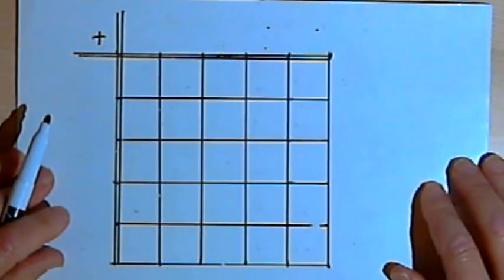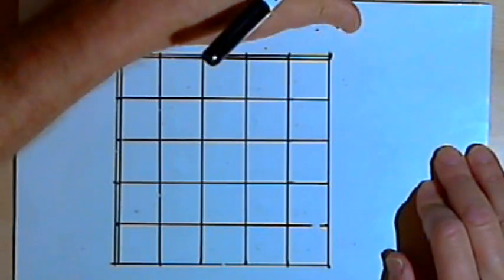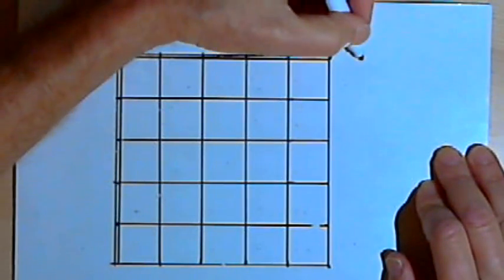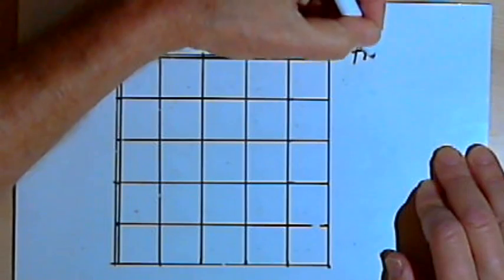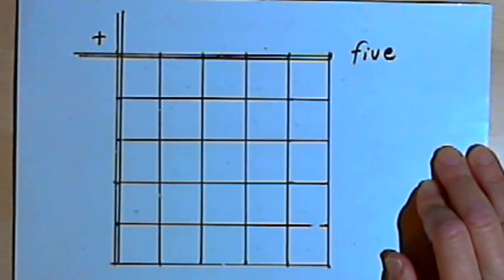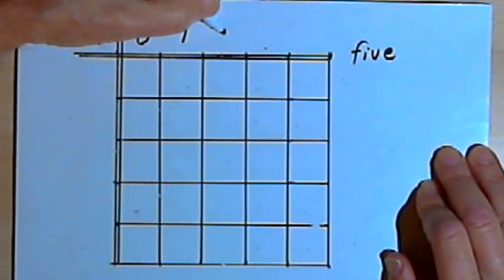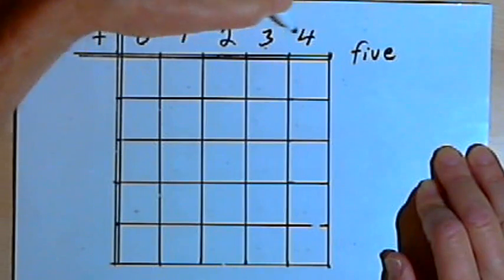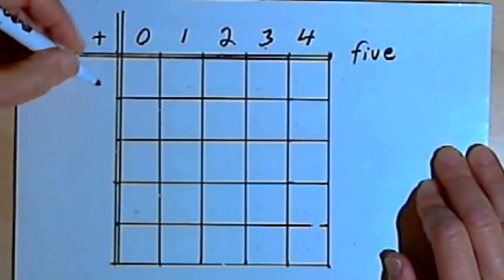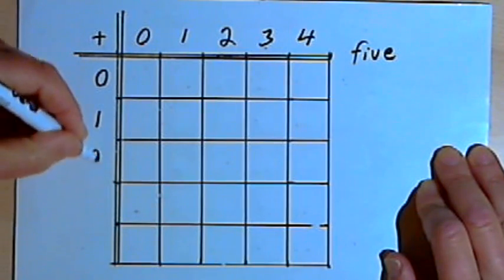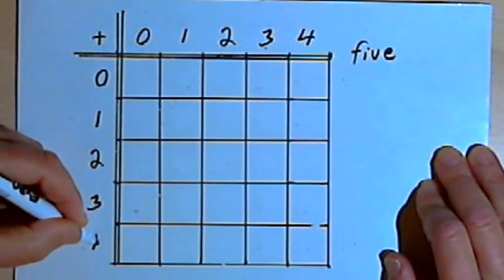So I'm going to make an addition table for base 5. I've got a kind of general framework here, just a grid work that we'll fill in. And I'm going to write 5 next to it, so remember that's base 5. So across the top, I'll write my numbers from 0 to 4: 0, 1, 2, 3, and 4. And down the side I'll write the same numbers: 0, 1, 2, 3, 4.